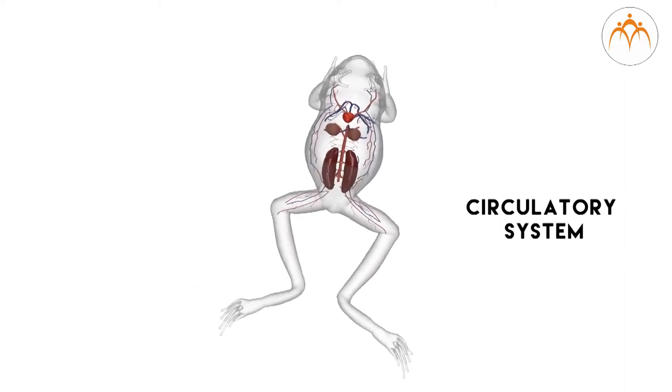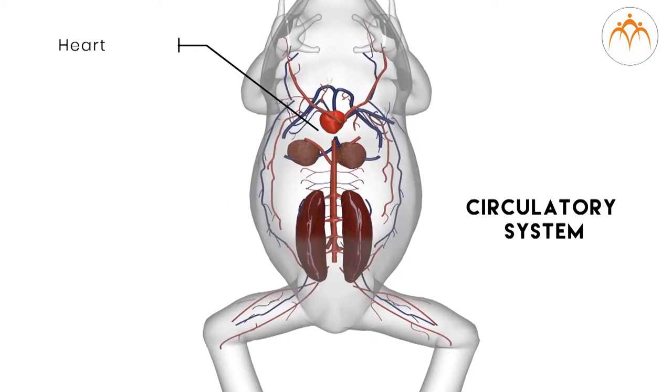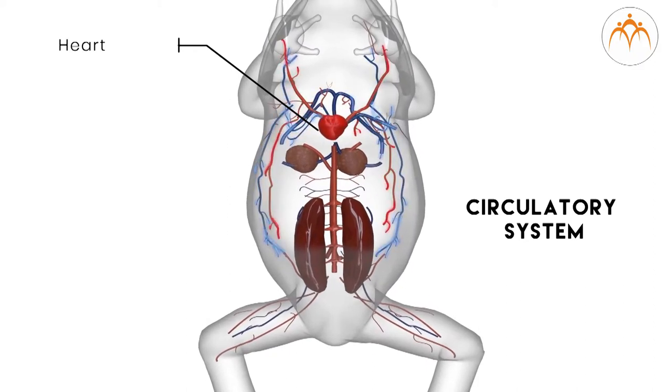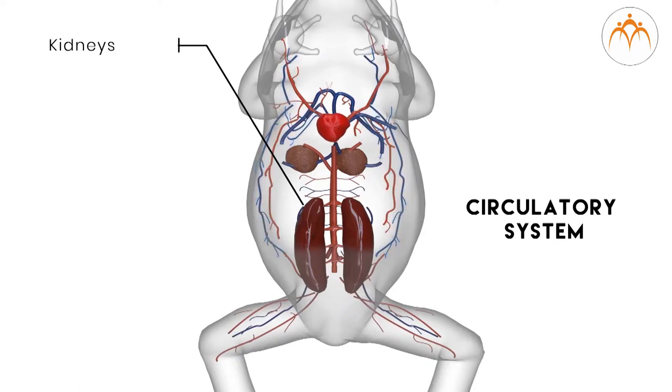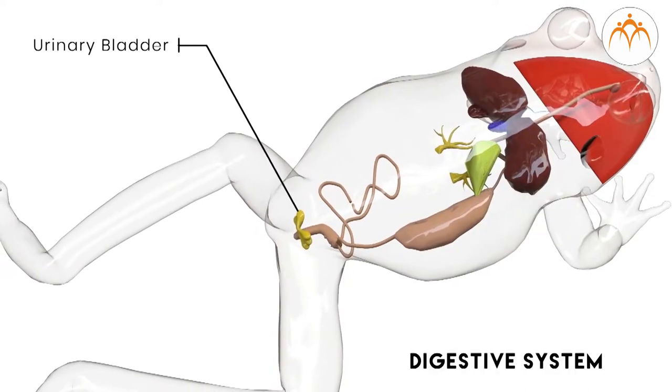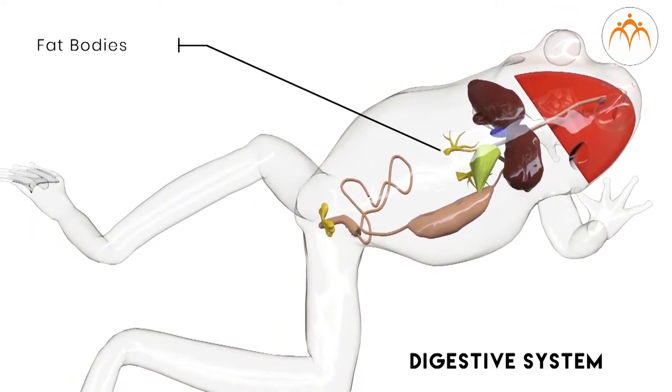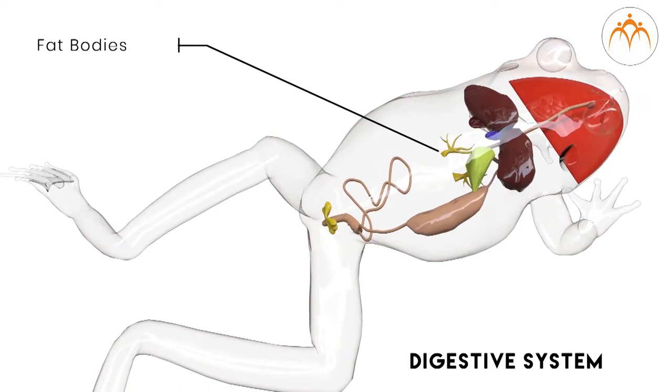The circulatory system of frog includes heart, blood vessels, blood, and the lymphatic system. Heart is situated on the ventral side of the liver in the middle of the body at the level of the forelimbs. If we compare the heart of frog with the human heart, it is primitive. The heart of frog has three compartments or chambers internally, whereas we have four. The heart pumps blood that transports water, food, and oxygen to various body organs. Frog has closed circulation just like humans, meaning blood flows through blood vessels. Apart from this, frog has a pair of kidneys which form urine. Urine is stored in the urinary bladder. Yellow colored finger-like structures called fat bodies can also be seen; they are a source of stored energy for the animal.